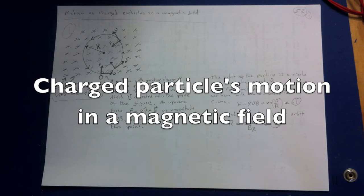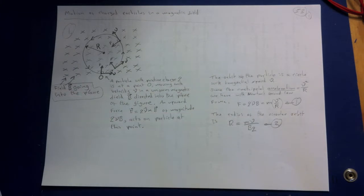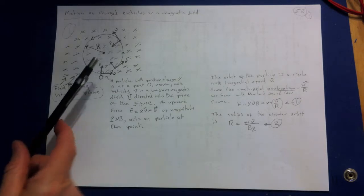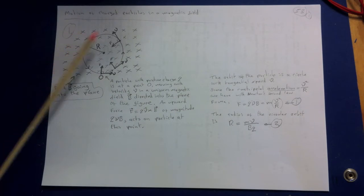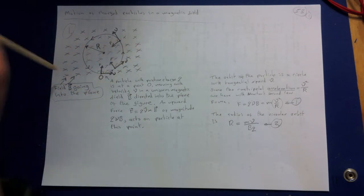Here is a simple example of the motion of a charged particle in a magnetic field. In this figure 1, a particle with positive charge Q is at a point O, moving with velocity V in a uniform magnetic field directed into the plane. These crosses are the tail ends of the magnetic field which is going into the paper.